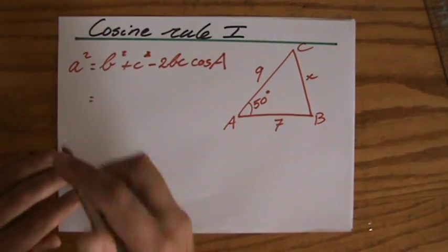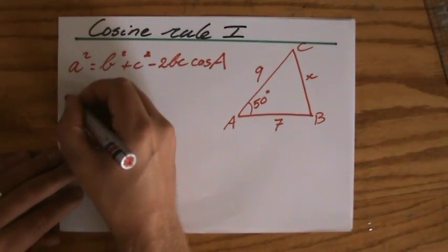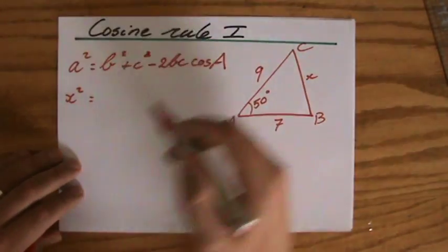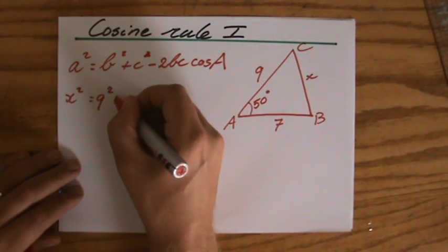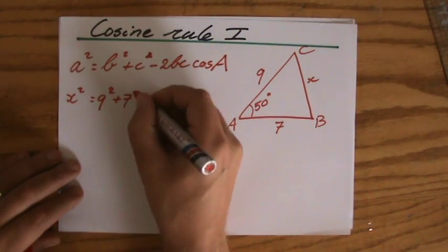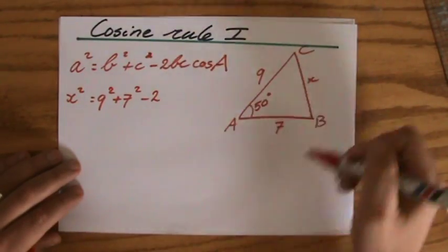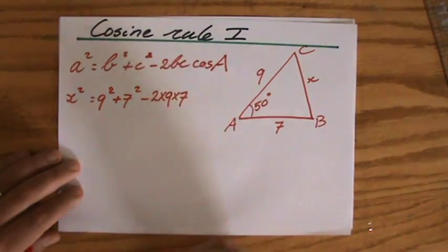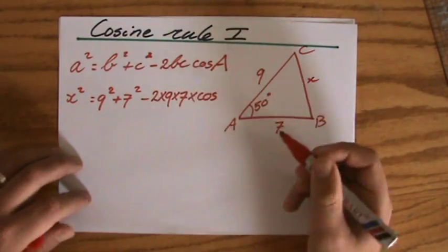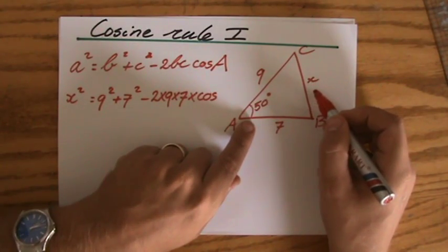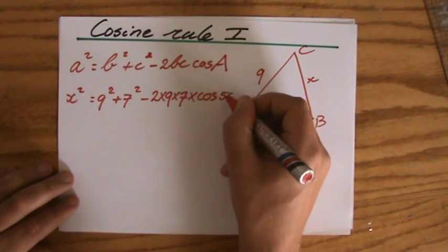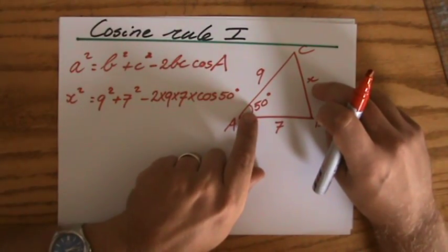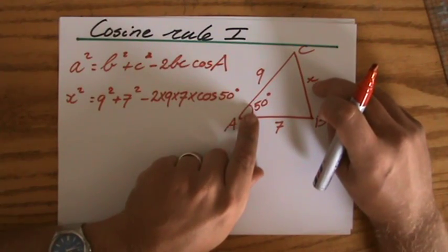So for this particular case, I'm going to write down that x squared equals the other two lengths squared — b and c — so 9 squared plus 7 squared, minus 2 times those two lengths again: 2 times 9 times 7, times the cosine. Now make sure that you have identified the team properly — the cosine of 50 degrees. Do not just take any other angle; you make sure that with the cosine rule you are looking at the proper team.